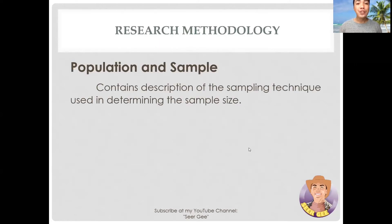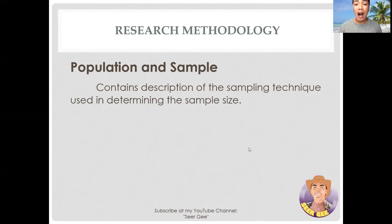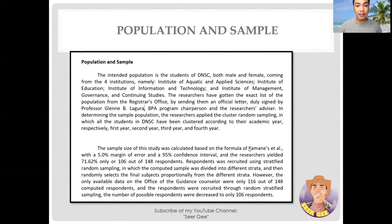Now, proceeding to the population and sample. This section contains the description of the sampling technique used in determining the sample size of the subject and how they were selected. As illustrated in the sample, it can be noted that the subject of the study was defined including the sampling technique to be used, from the total population where you can obtain the list of respondents to get the sample size.